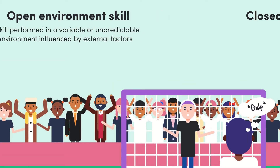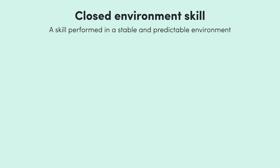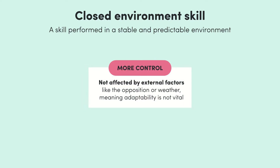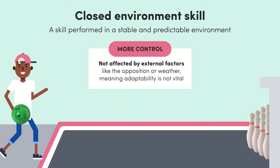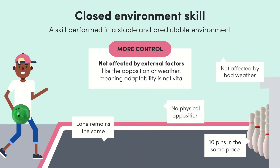On the other hand, we have closed environment skills. Closed skills aren't heavily affected by their immediate environment, meaning they're more stable and predictable. The opposition doesn't have much impact on performance, and it's not receptive to weather changes, meaning the athlete can exercise much more control. Think about ten-pin bowling — the lane always stays the same, there are always ten pins in the same place, and the skill can be practiced over and over in the same conditions.